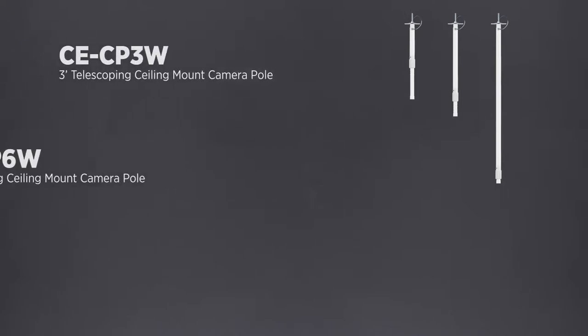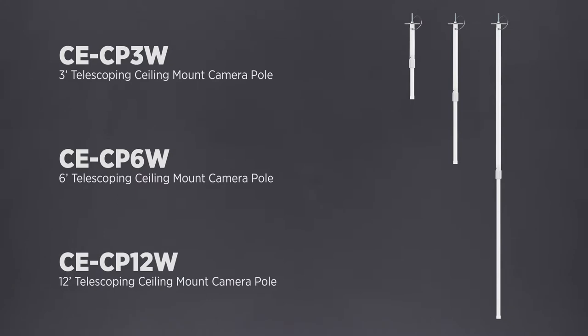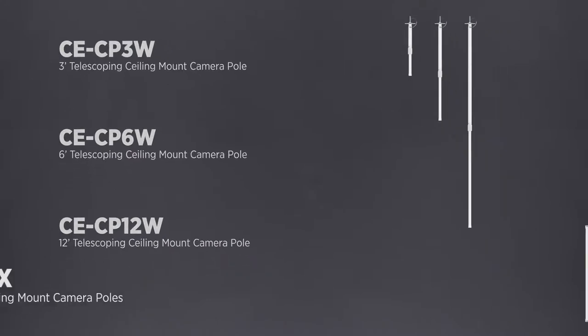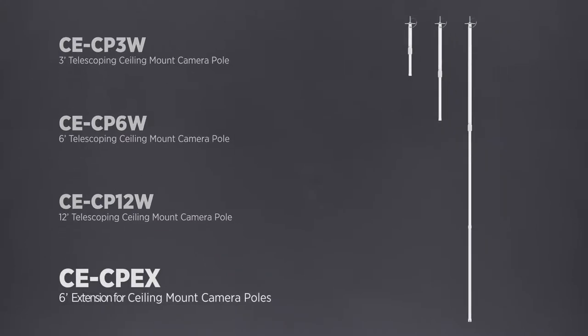With lengths ranging from one foot three inches collapsed all the way up to eleven feet nine inches extended, there's a pole for nearly any installation. For extra high ceilings, we now offer bolt-on six foot extension poles.